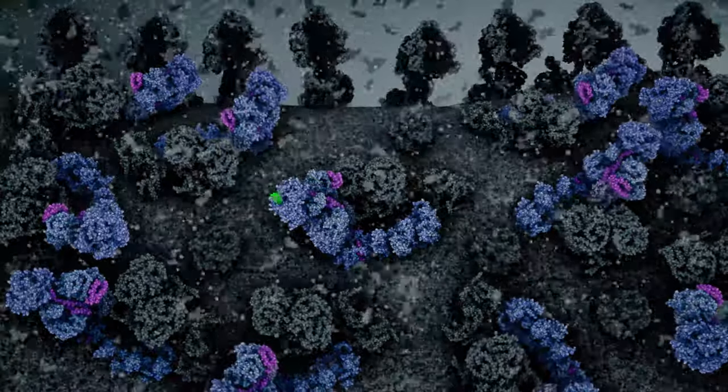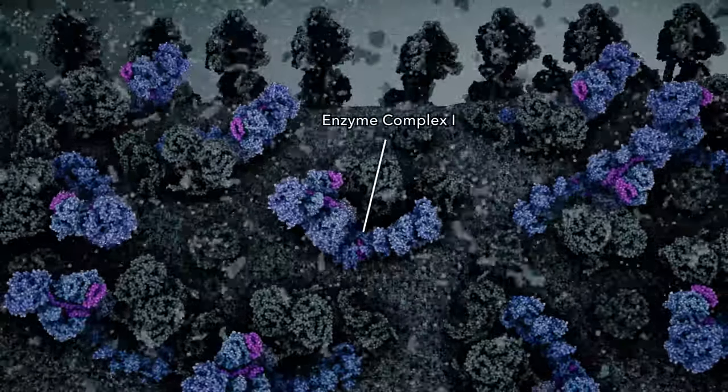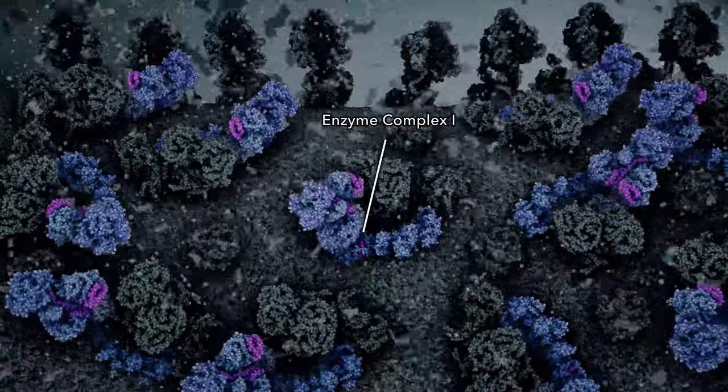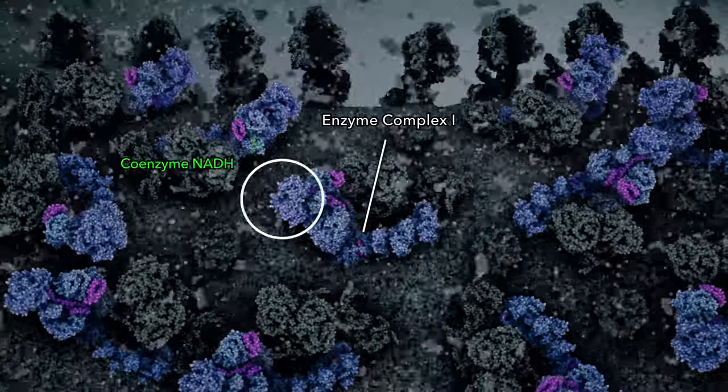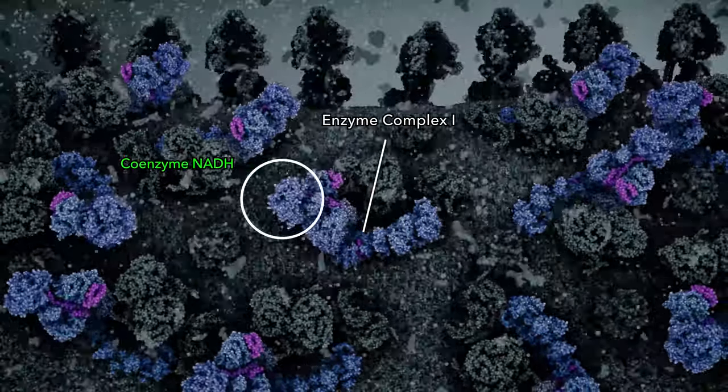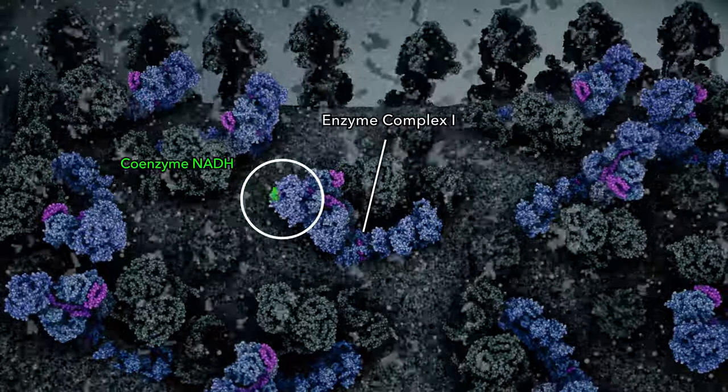The first step in the electron transport chain is performed by enzyme complex 1. Complex 1 receives electrons from coenzyme NADH, a substrate produced by the citric acid cycle.